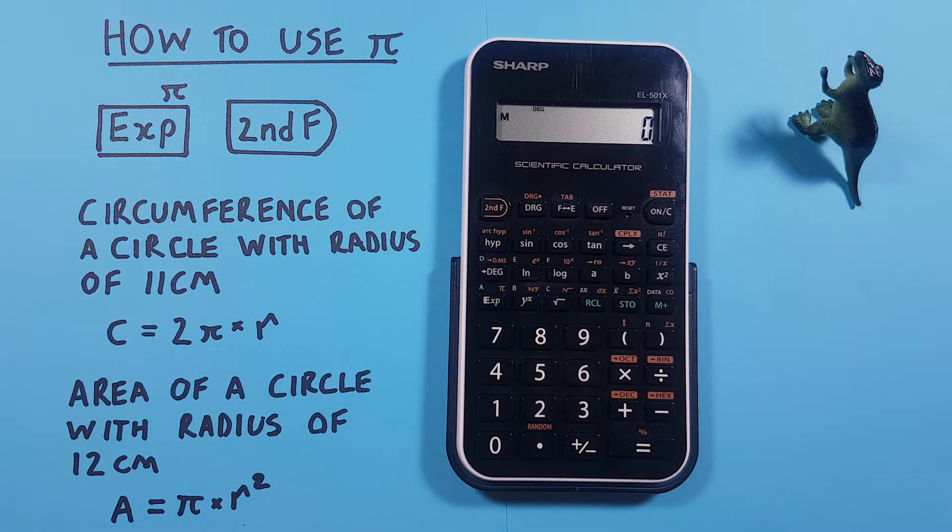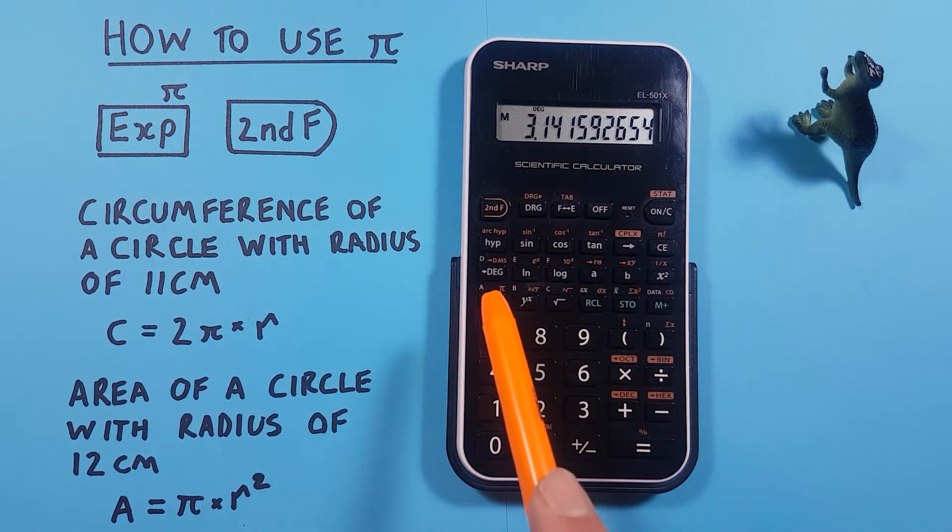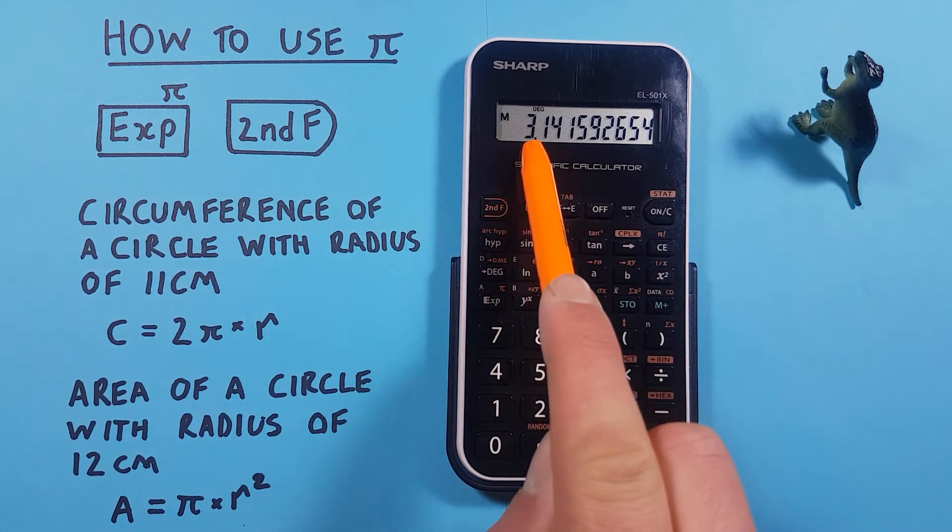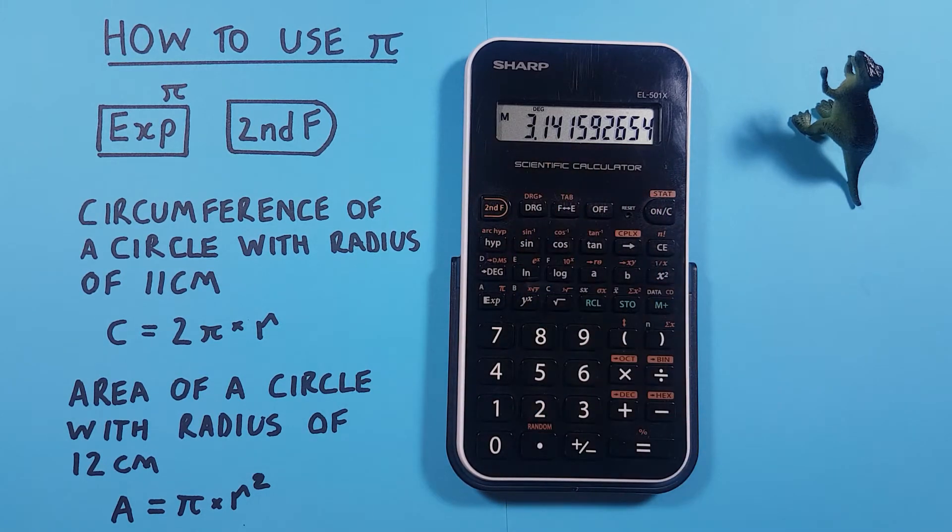To access PI, what we have to do is press second and then the exp key. That'll place the number for PI on the screen and we can use it in calculations.